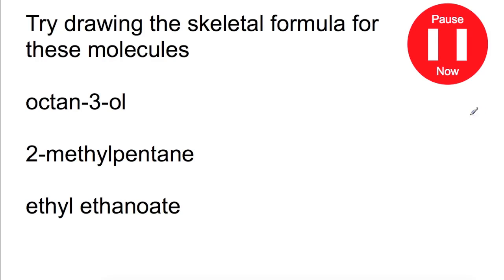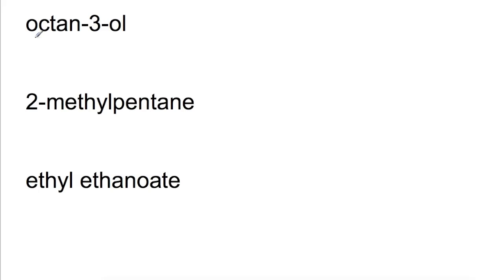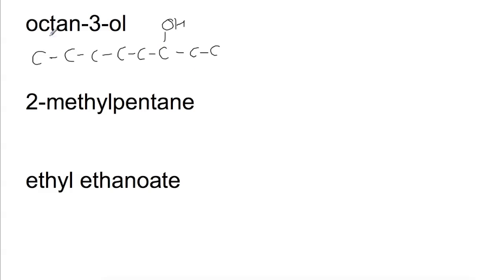Pause the video now and try drawing skeletal formulae for these molecules. The first molecule is octan-3-ol. One way to start drawing the skeletal formula is to draw out the full formula first if you're a little confused. So we would have eight carbons, and on the third one we would have the OH group. Then you follow this and put it into the zigzag arrangement: the first carbon joined to the second, then zigzag down to the third, fourth, fifth, sixth, seventh, eighth — and on the third carbon we have an O with the H attached to it.